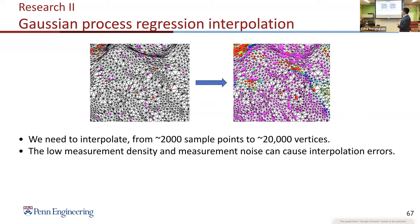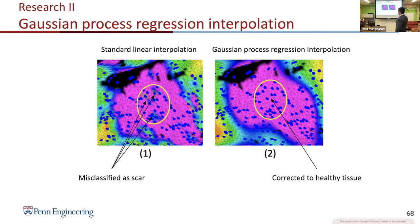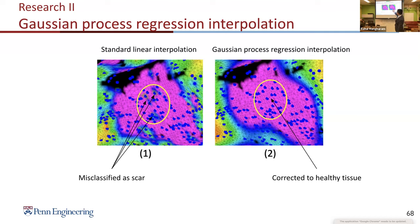For sparse electrogram regions, interpolation may introduce errors. We implement a Gaussian process regression interpolation that takes neighboring nodes into consideration. This corrects local errors — for example, three spots interpreted as low-amplitude scar are corrected to healthy tissue after Gaussian processing, which makes more sense because small scattered scar spots are rare in reality.